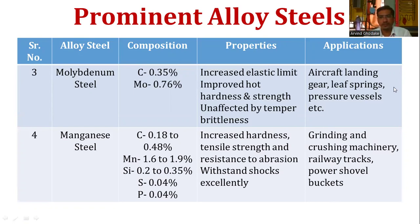The next alloy steel is manganese steel. It contains 0.18 to 2.48 percent carbon, 1.6 to 1.9 percent manganese, 0.2 to 0.35 percent silicon, 0.04 percent sulfur, and 0.04 percent phosphorus. The properties of manganese steel are increased hardness, tensile strength, and resistance to abrasion, with excellent ability to withstand shock.